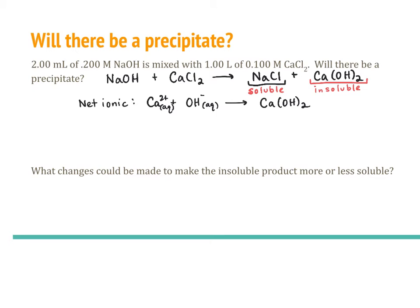This net ionic equation is really the reverse of the Ksp equation. Written in Ksp form: Ca(OH)₂ is in equilibrium with Ca²⁺ and 2OH⁻. So we know the insoluble salt that drives the precipitation. Now we need to figure out, based on the amounts of sodium hydroxide and calcium chloride added and their concentrations, whether there will be enough calcium and hydroxide ions to cause a precipitate to form. We will use the volumes and molarities from the problem to find the concentration of each ion.